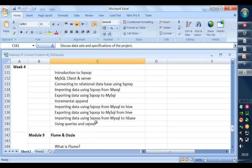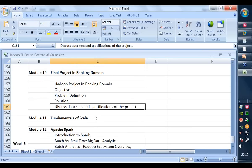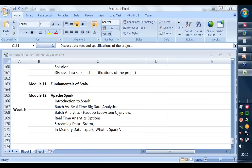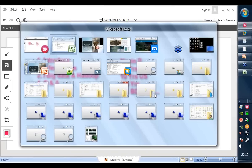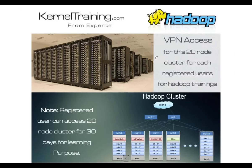We'll be covering Flume and there's a final project — what's the problem statement, what's the solution, how do we achieve it, what are the data sets and specs. One more thing: we will also give you a 20-node cluster with VPN access so you get a real-time feel of how things work. We'll give you VPN access in the first week once you register after completing a few formalities.